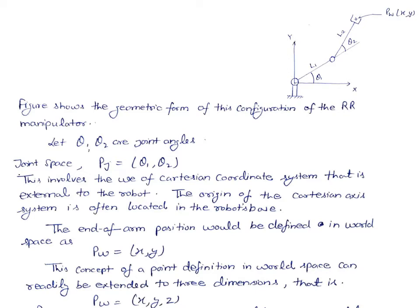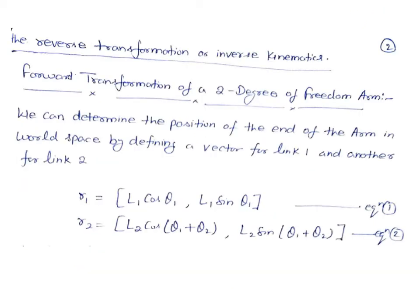If the world space position is given and you want to calculate the relative angles theta one and theta two — moving to the joint space — this is called reverse or inverse transformation, or inverse kinematics. For this two-degree-of-freedom arm, we first calculate the forward transformation equations to define the position of the end of the arm in world space.